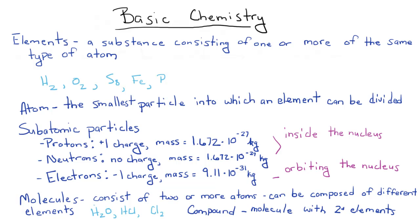Atoms are the smallest particle into which an element can be divided. And atoms can be further subdivided into subatomic particles. There are many different types. We're just going to focus on three because these are the only ones you really need to know. So you have protons, neutrons, and electrons.